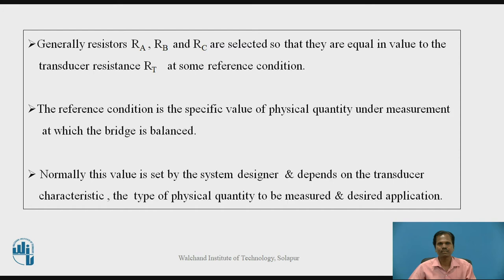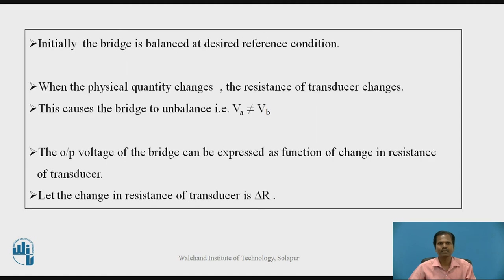The reference condition is the specific value of a physical quantity under measurement at which the bridge is balanced. This value is defined by the instrumentation system designer and depends on the transducer characteristics, the type of physical quantity to be measured, and the desired application. Initially, the bridge is balanced at the desired reference condition. When the physical quantity changes, the resistance of the transducer also changes, causing the bridge to become unbalanced. When the bridge is unbalanced, VA is not equal to VB, and the output voltage of the bridge can be expressed as a function of the change in resistance of the transducer.